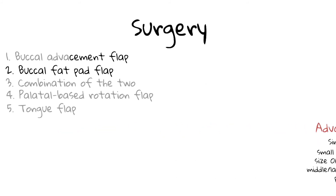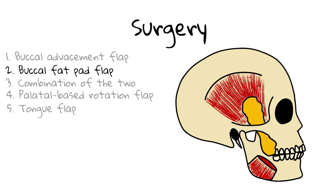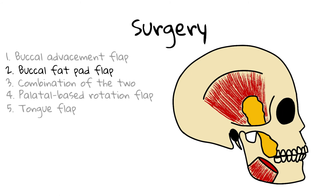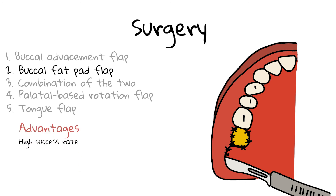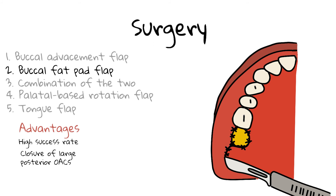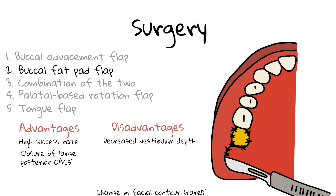The buccal fat pad flap uses the buccal fat pad, a fatty tissue located between the buccinator muscle and the mandibular ramus. This flap involves making an incision in the vestibule adjacent to the maxillary tuberosity to take out the fat pad. It should not be disconnected from the main body of the fat pad because it needs blood supply to remain viable. The fat is then filled into the defect and sutured to the palatal and buccal mucosa. This flap results in good epithelialization and a high rate of success. It is good for closure of large posterior OACs, but may result in a decrease in vestibule depth, and a rare visible change in facial contour has been reported when used for large defects.